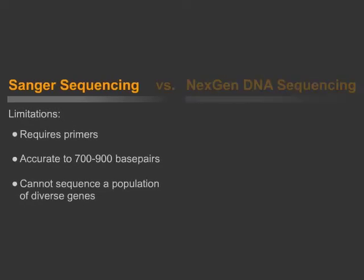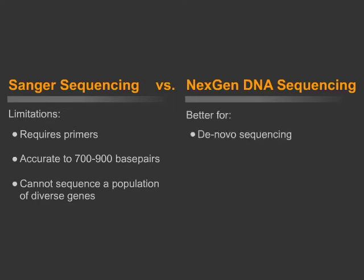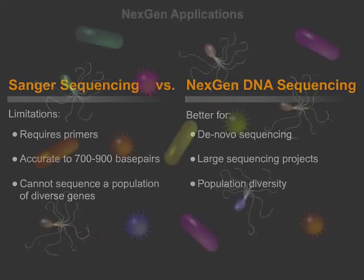To address these shortcomings, next-generation, or next-gen, sequencing was developed. Next-gen is much better than traditional Sanger sequencing for de novo sequences, large, higher throughput sequencing projects, and population diversity studies.